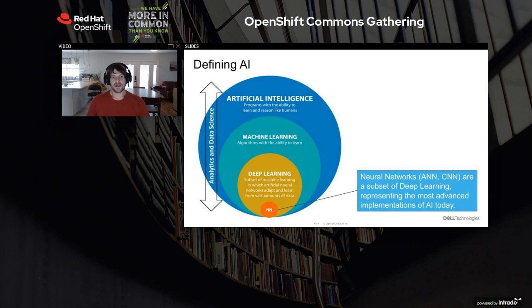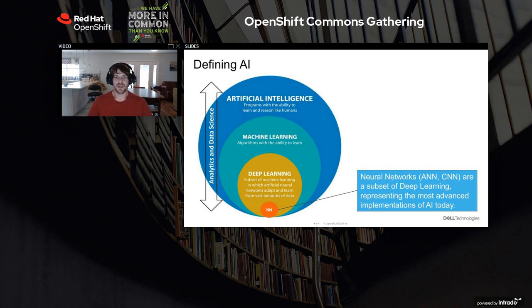Artificial intelligence is a big subject that encompasses many things, of which machine learning is only a subset of what enables artificial intelligence. AI is also driven with automation and being able to act on the predictions or classifications made by machine learning algorithms. Inside of machine learning, there's deep learning and neural networks, which are the most state-of-the-art implementation of artificial intelligence today. These neural networks happen to be very fast to train and run inference on GPUs, and we'll talk about how the OpenShift platform enables some of that with Kubernetes.